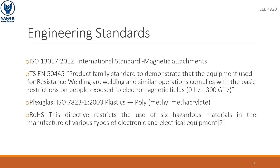I continue to explain engineering standards. In this section, we see the engineering standards of the materials we use. The magnets are ISO 13107 international standards. Electromagnets have TSIN 50445 standard. The plexiglass we will use as prototypes are in ISO 7823 standards. Finally, all electronic components in our project are prepared according to Restriction of Hazardous Substances regulations and are suitable.